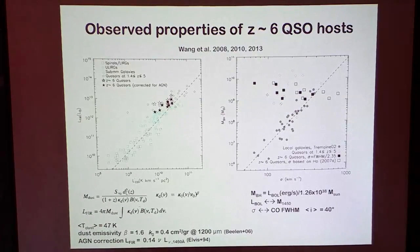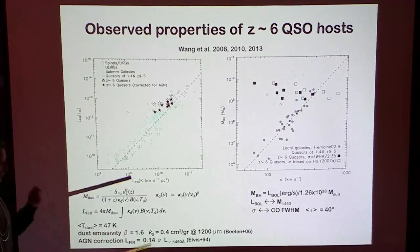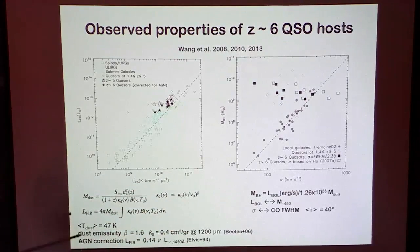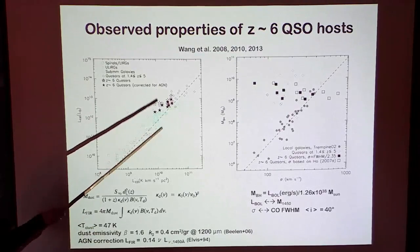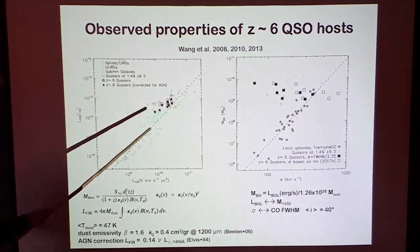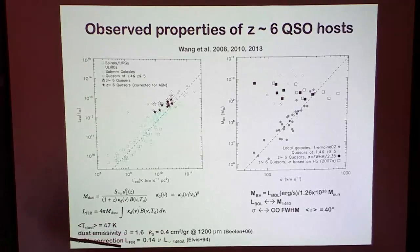Just to remind you of the basic assumptions needed to infer some of these observational properties from the data — I've sketched here a few equations. First of all, to estimate the far-infrared luminosity you need to assume that the dust is optically thin, assume a dust temperature and emissivity, and then you can infer the far-infrared luminosity. The empty circles, empty stars, and filled stars are after a correction due to the AGN contamination; they adopt, following Juan Gerard et al., a volumetric correction using the template of Alvis 1994.